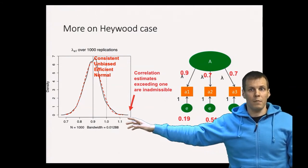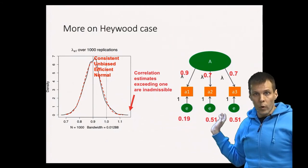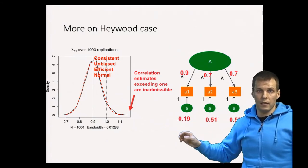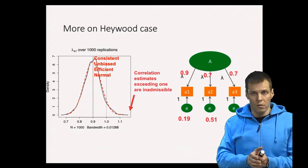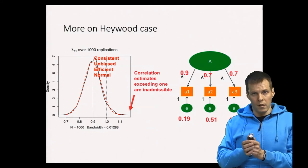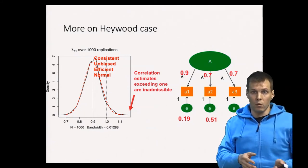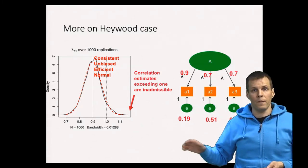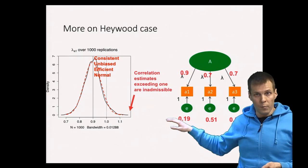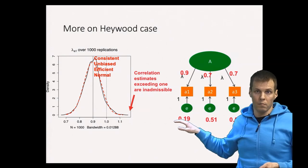So if your estimated error variances are way below zero then that's an indication of a problem. If they are slightly below zero then you could say that maybe the population value is actually a small positive number but it's only a small sampling fluctuation thing. You don't know but if you have small values then I would be okay with just saying that the indicator is highly reliable.